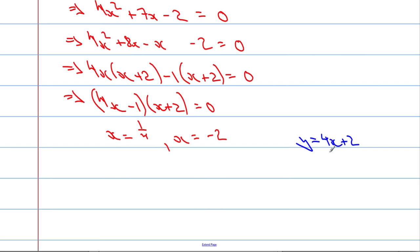So when x is 1 quarter, that means that y is going to equal 4 times 1 quarter plus 2, is going to be 3. And when x is negative 2, 4 times negative 2 is negative 8. Negative 8 plus the 2 is negative 6. So the points of intersection are 1 quarter and 3, and negative 2 and negative 6.